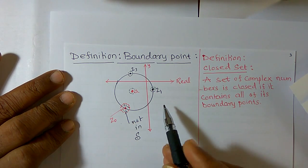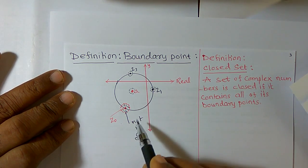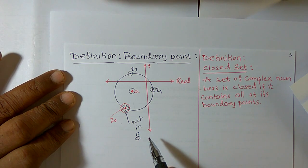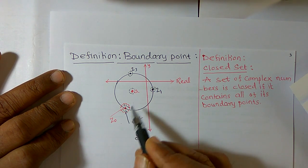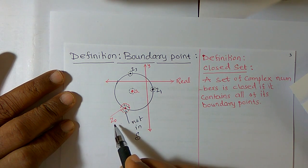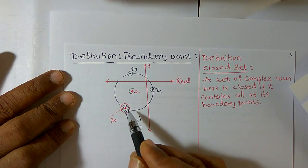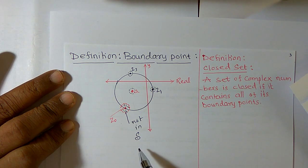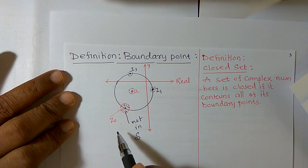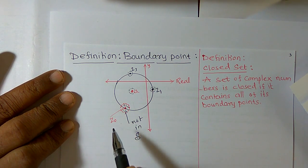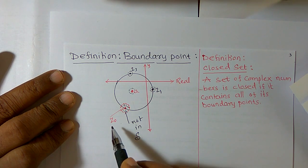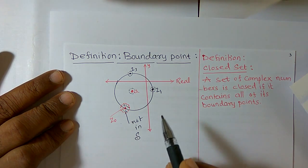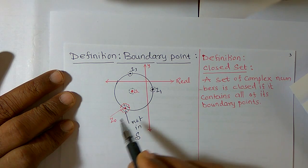Now I want to define a boundary point. Draw a circle with center at A and construct a disk around A — the disk contains some points and all points belong to the region. Now take a point on the boundary line, say z0. Construct an open disk around z0. Observe: some points belong to the region and some points do not belong to the region. To call z0 a boundary point, I must find at least one point that belongs to the region and at least one point that does not belong to the region. Here, clearly, z0 is a boundary point.